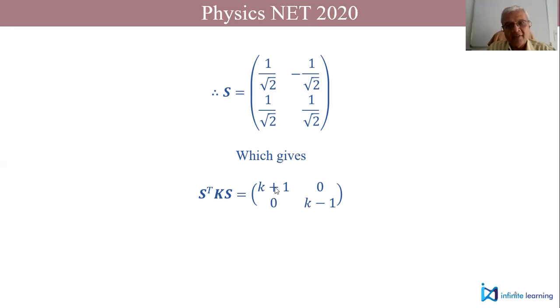The first one will have a spring constant k+1 and the second one will have k-1. So in this case, option 2 is the correct answer.